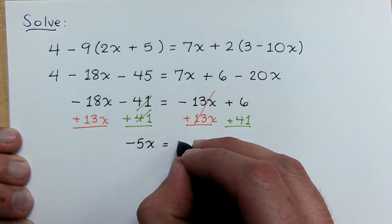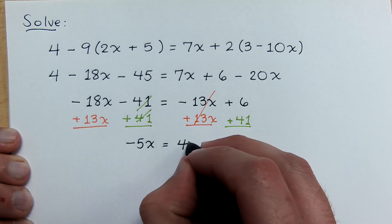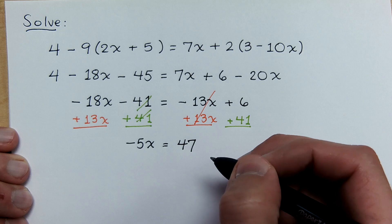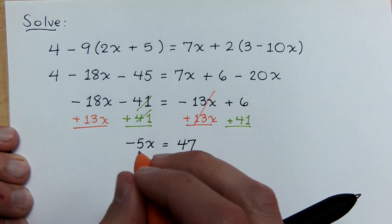Negative 5x. Negative 5x equals 47. Oh, we're almost done. I'm so excited. I don't know if I can contain myself. Divide both sides by.